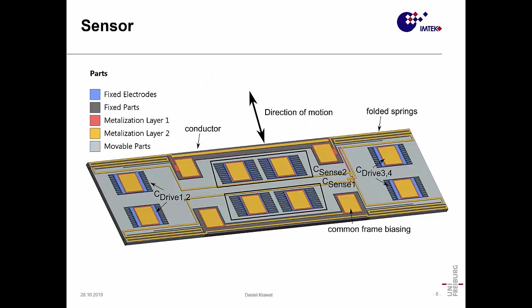This is the sensor device that we developed. Here you see this light gray area is the movable part. It's anchored on these darker areas and it's anchored via these folded beams. These folded beams also carry the conductor path. It's important to see that the conductor is wired in such a way that the current always goes in the same direction to not generate contradictory Lorentz forces that would hinder the motion of the sensor. The direction of motion is in plane and it can detect out-of-plane fields. We have four drive capacitances and two pairs of sense capacitances.